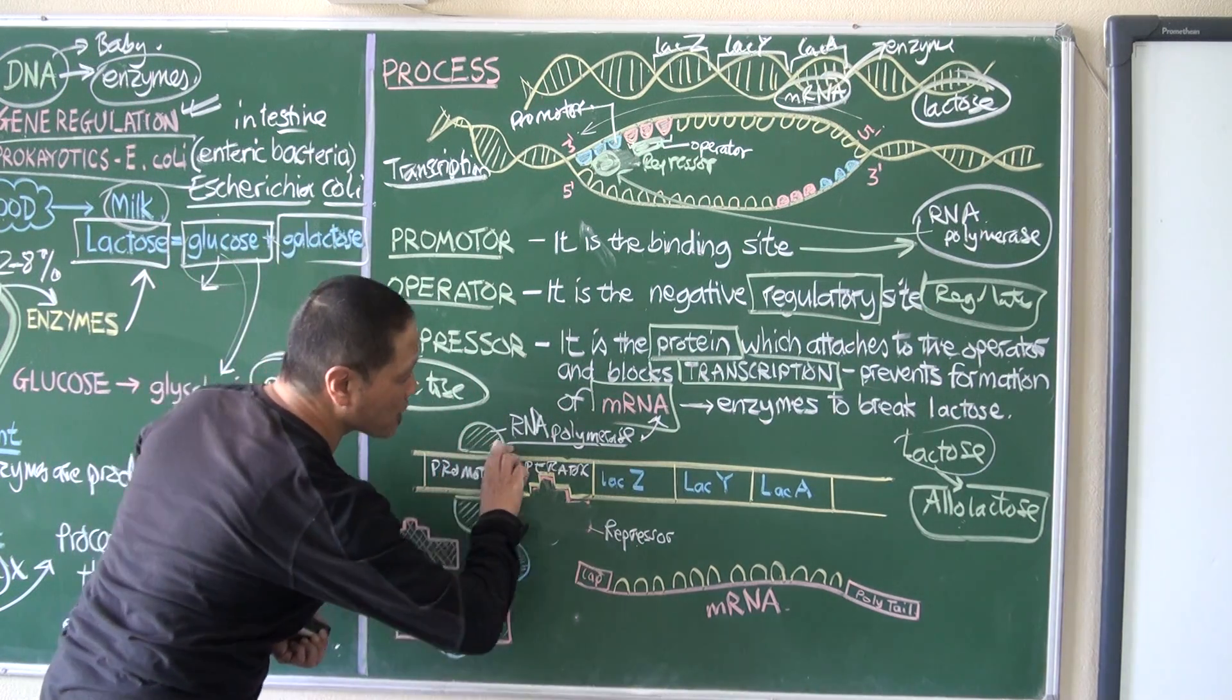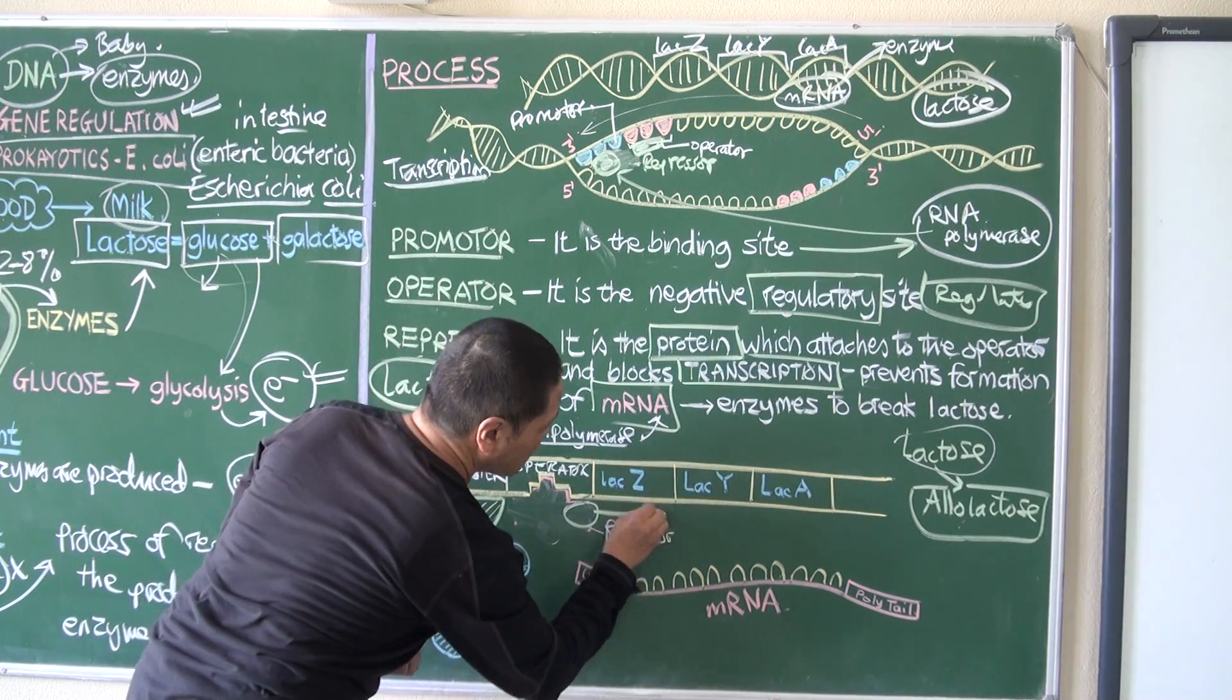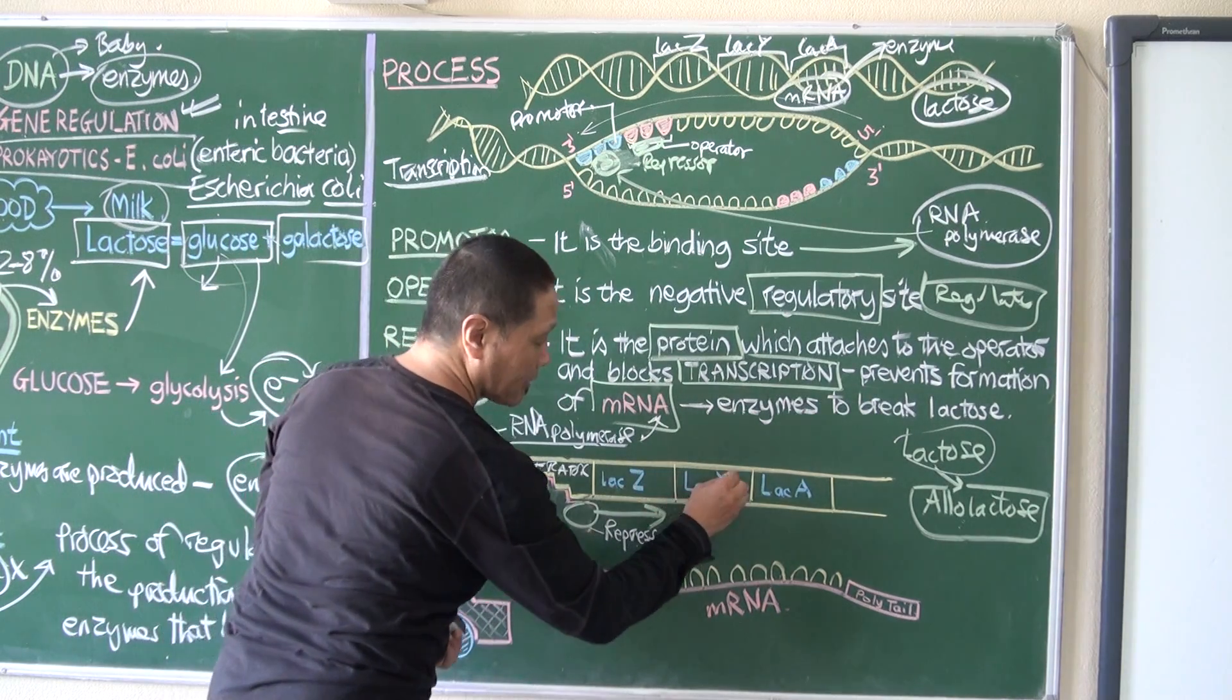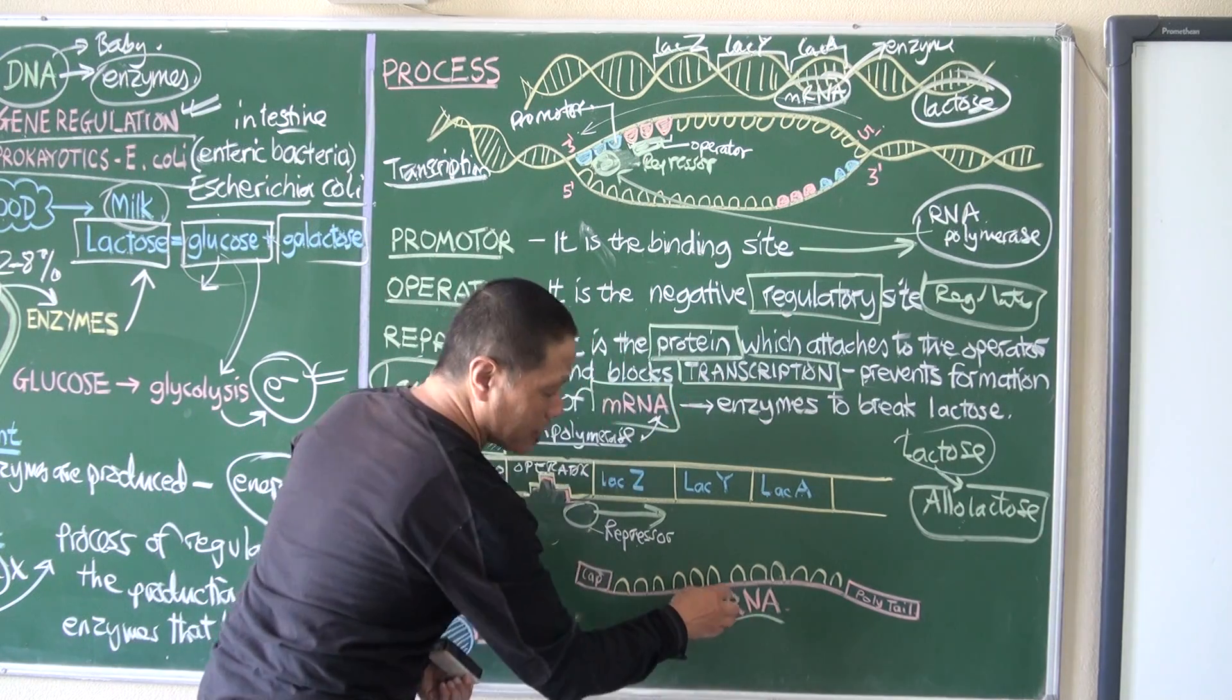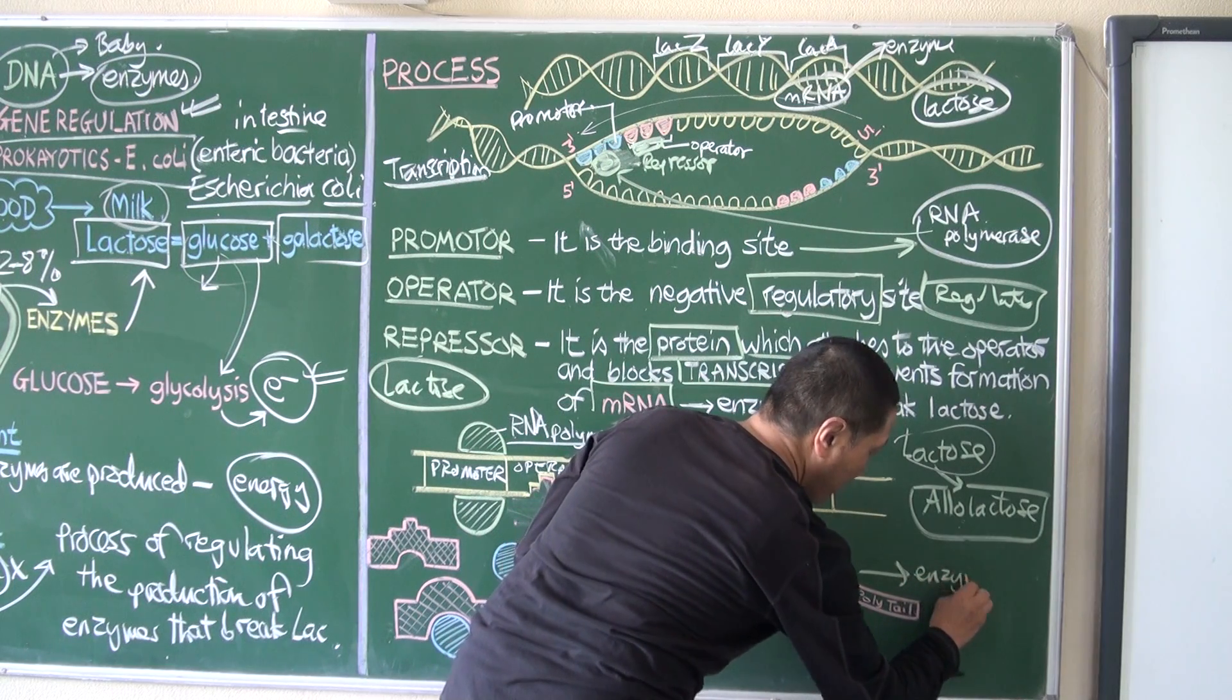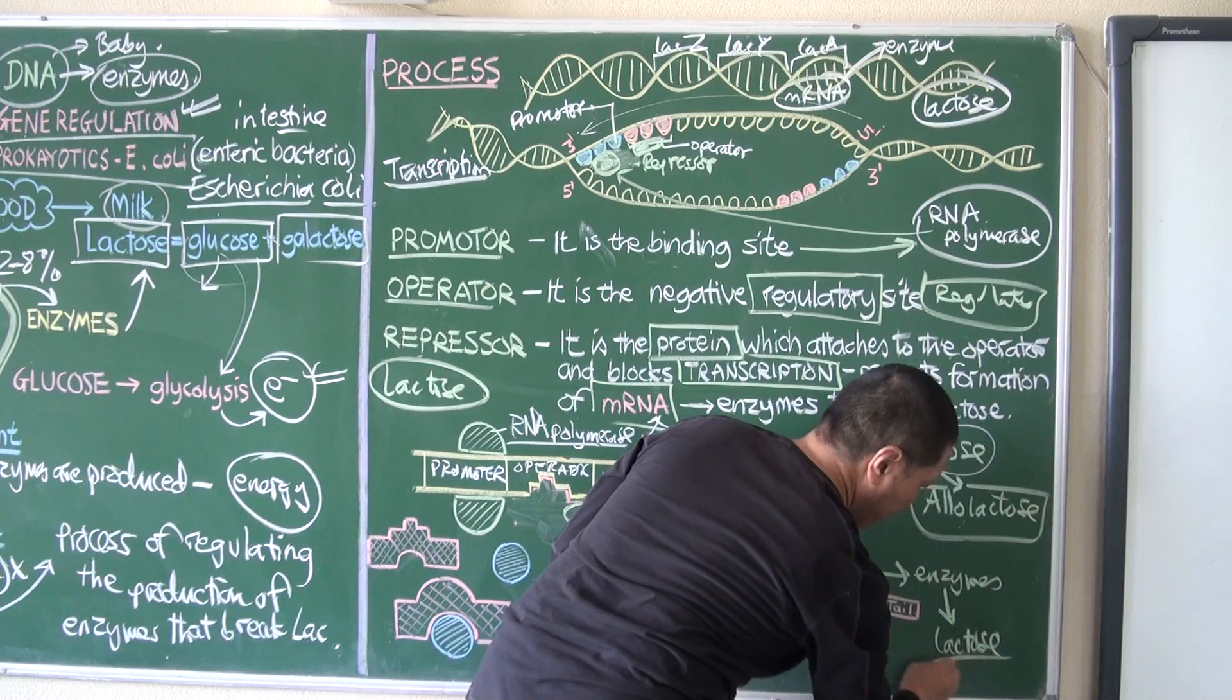The RNA polymerase can now move forward and it does, and it copies the genes like Z, Y, A to form this mRNA. This mRNA goes and produces the enzymes required for the breakdown of lactose.